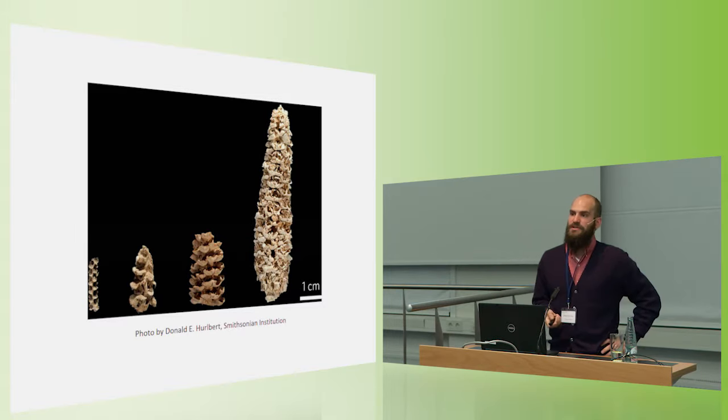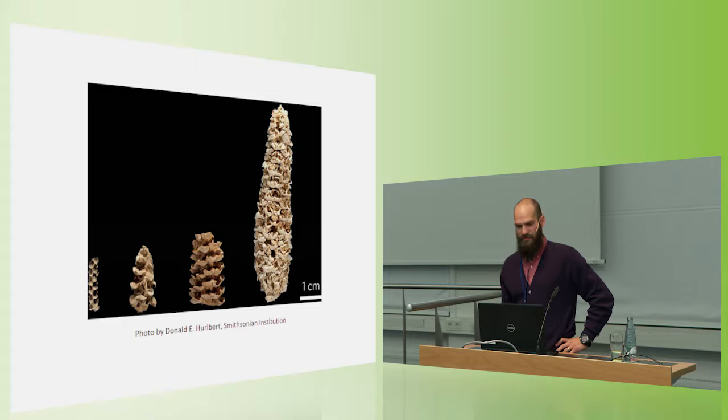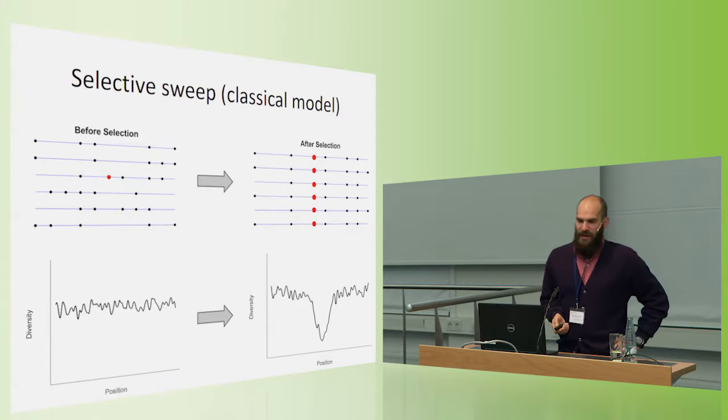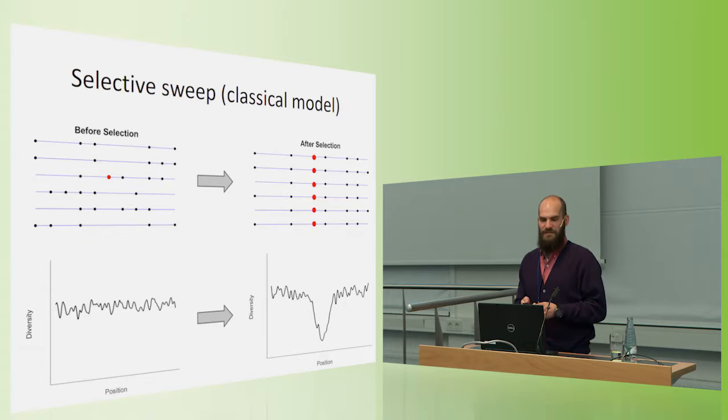So we can ask the question, what forms of selection have been undergoing or what forms of selection has maize been undergoing to improve like this? I almost pulled this slide from my talk because Bruce did such a good job describing these different types of selection yesterday. But I left it in because I want to demonstrate one of the possible forms of selection that could describe maize evolution.